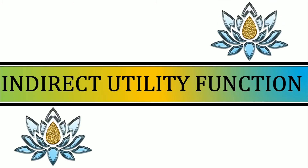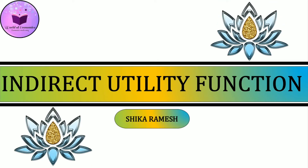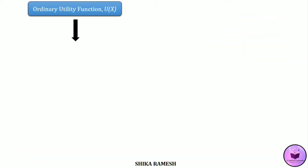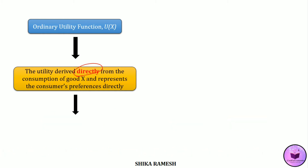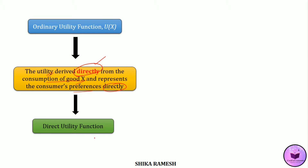Hello friends, in today's video we shall go through the indirect utility function. An ordinary utility function, denoted as u as a function of good x, shows the utility derived directly from the consumption of good x or any good, and it represents the consumer's preferences directly. Since the consumer receives the utility directly from the product, the ordinary utility function is also known as the direct utility function.